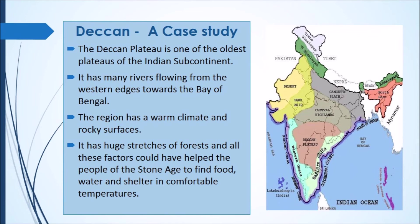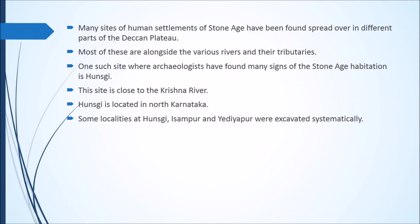On the west of the Deccan Plateau is the Western Ghats and on the east are the Eastern Ghats. The plateau has many rivers flowing from the western edges towards the Bay of Bengal. It has a warm climate and rocky surfaces, with huge stretches of forest. Because of all these factors, people of the Stone Age settled here to find food, water, and shelter in comfortable temperature. Many sites of human settlements from the early Stone Age have been found across the Deccan Plateau.